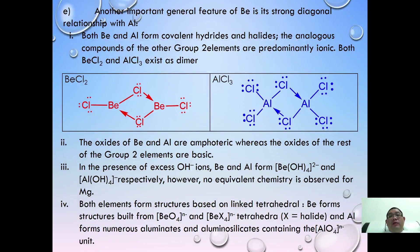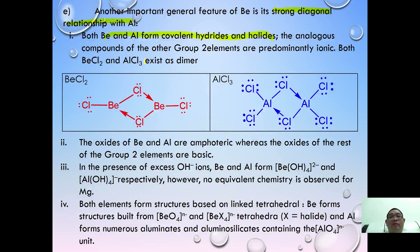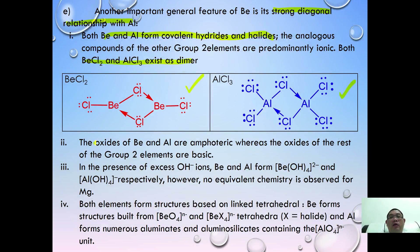Another important feature of beryllium is its strong diagonal relationship with aluminium. Both beryllium and aluminium have covalent hydrides and halides, whereas the rest of group 2 are predominantly ionic. Both beryllium and aluminium can exist as dimers — for example, beryllium chloride dimer and aluminium chloride dimer — both using chlorine to form dative bonds to another atom.